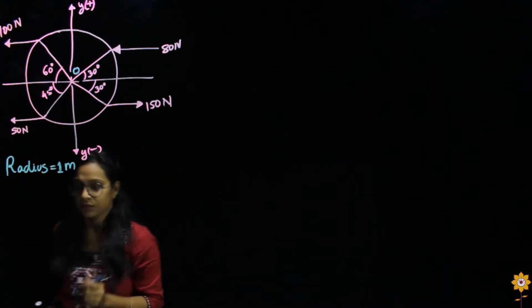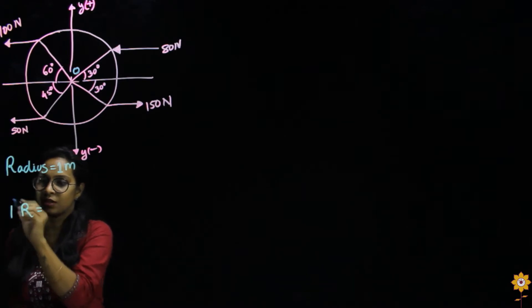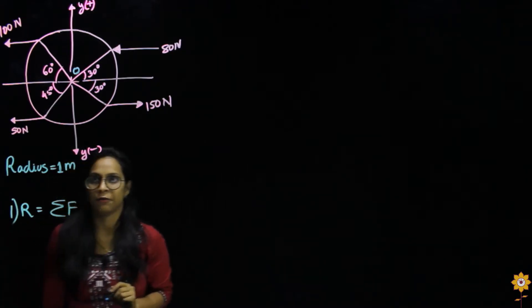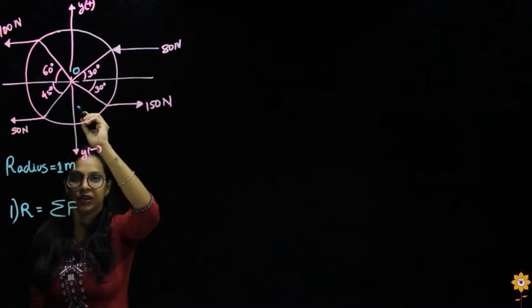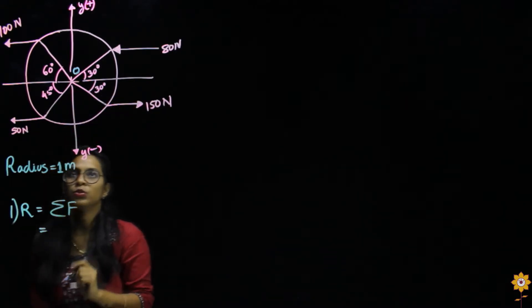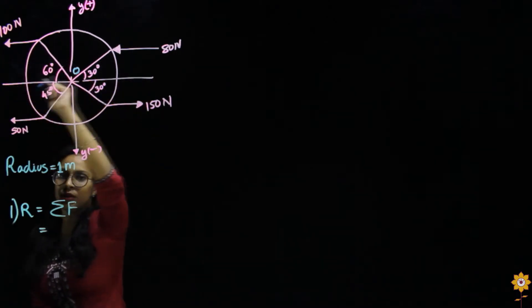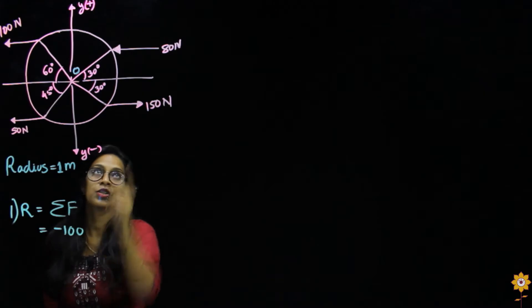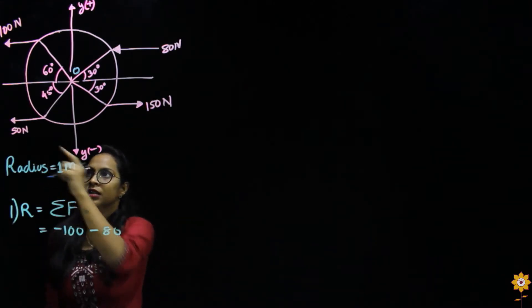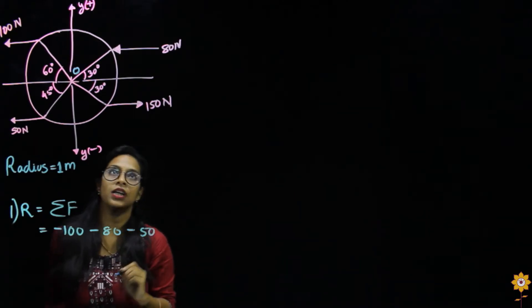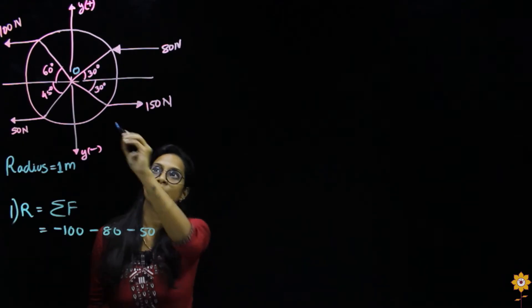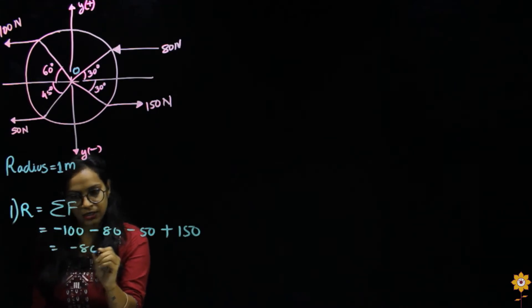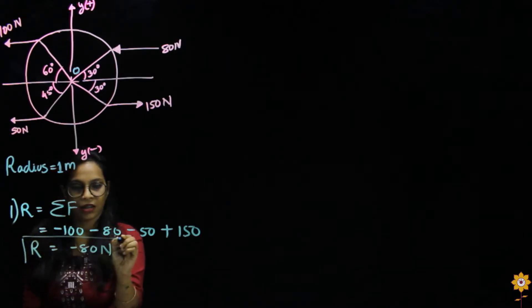Let us find the resultant first. The resultant is equal to the summation of F, because all the forces are parallel to each other directed along the same axis. This force is going backwards, so by sign convention it is negative — that is, minus 100. Similarly, this would be minus 80. This is also in the backward direction, so minus 50. This force is going in the positive direction, so it is plus 150. Calculating this, we get the resultant force to be minus 80 Newtons.